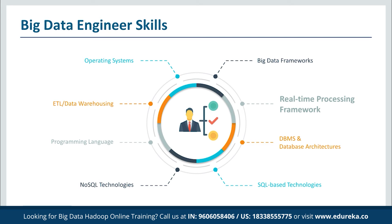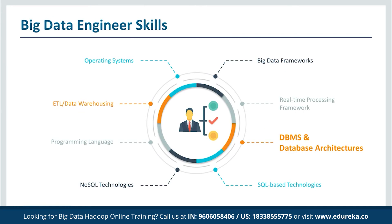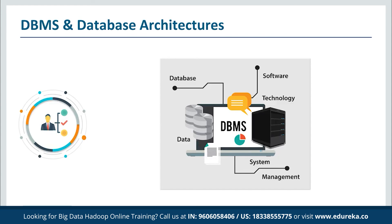The next skill is real-time processing frameworks. Real-time processing with quick actions is the need of the hour — whether for detecting fraudulent transactions in a credit card system or a recommendation system. Apache Spark is one such distributed real-time processing framework used rigorously in the industry, and it can be easily integrated with Hadoop leveraging HDFS. Next is database management systems and architecture. A DBMS stores, organizes, and manages large amounts of information within a single software application. Data engineers need to understand DBMS to manage data efficiently, enabling improved data sharing, security, access, integration, and minimizing data inconsistencies.